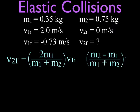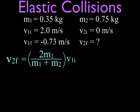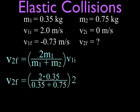That simplifies our equation for the final velocity of mass number two into 2 times 0.35, the mass of number one, divided by the mass of both of them, multiplied once again times the initial velocity of mass number one. And that gives us a final answer, which should make sense for an elastic collision between those two balls, of 1.27 m/s for mass number two.